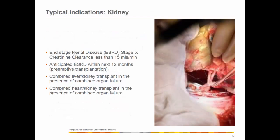Kidney transplantation is the most common type of solid organ transplantation. The primary indication is end-stage renal disease or renal failure. Additional indications include anticipated end-stage renal failure within the next 12 months, combined liver-kidney transplant in the presence of combined organ failure, and combined heart-kidney transplant in the presence of combined organ failure.